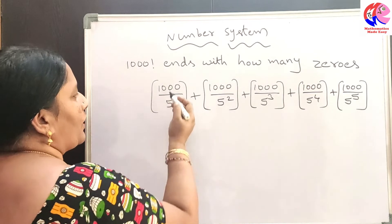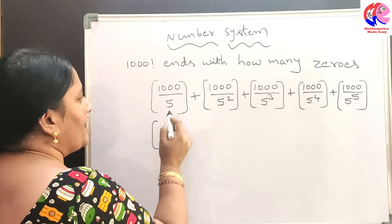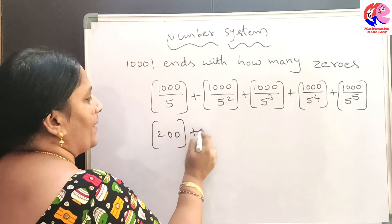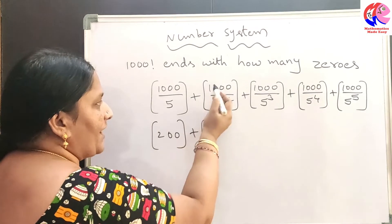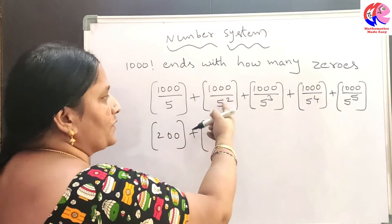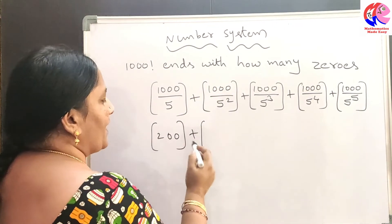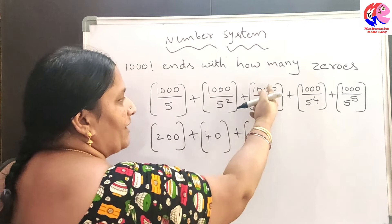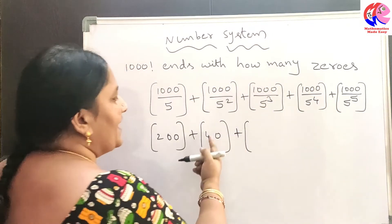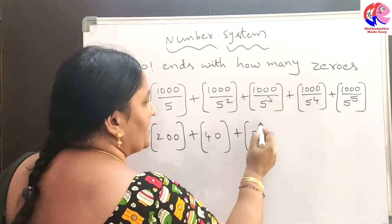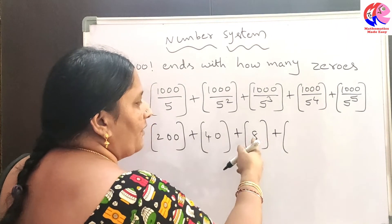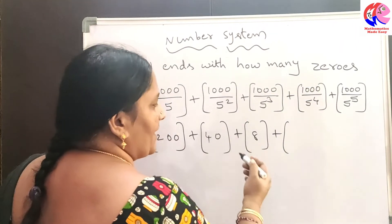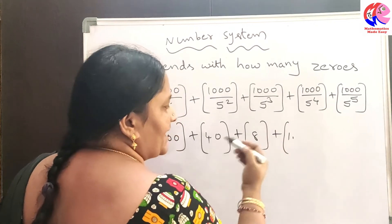Let us compute each term. The integral part of 1000/5 is 200. Now the integral part of 1000/25, which is 200/5, gives 40. Then the integral part of 1000/125, which is 40/5, gives 8. Next, the integral part of 1000/625, which is 8/5, gives 1 point 6 — so the integral part is 1. And 1000/3125 gives 0-point-something, so the integral part is 0.